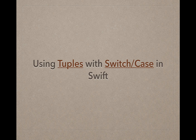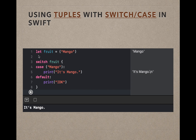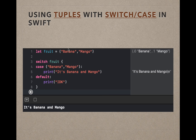The next example uses tuples. Here a simple fruit equals a mango string goes into a simple switch case. What we want to do is use a tuple instead, so we can check if the tuple as a whole satisfies the case. We have a tuple of banana and mango, and the case banana and mango prints 'it's banana and mango'.